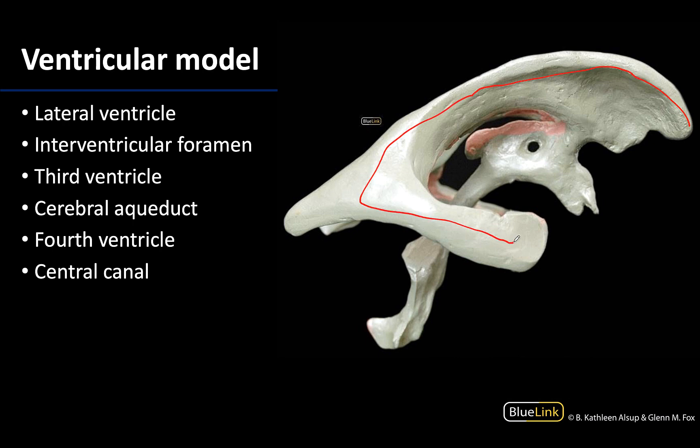You can also think of the lateral ventricles as your first and second ventricles. Now you can only see the right lateral ventricle here, and a little bit of the left lateral ventricle over in this region. Since the right lateral ventricle is so large and we're looking at a lateral view, you can only see the one. These are by far the largest ventricles and are located within the cerebrum.